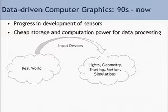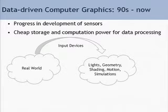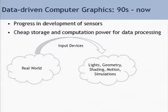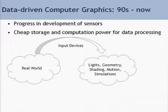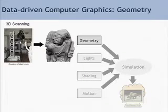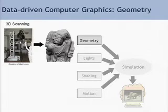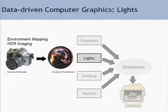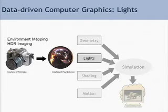We had a few reasons for this. There has been amazing progress in the development of different sensors, which we were able to use to measure the real world. Second, we had access to cheap storage and cheap computation power, which we were able to use to analyze and process the data. In geometry, we used 3D scanners to acquire huge geometric models with hundreds of millions of polygons at extremely high precision. And although environment mapping has been around since the early 1980s, progress in digital cameras and high dynamic range techniques made it really commonplace.